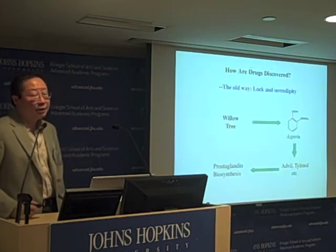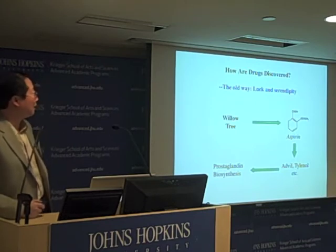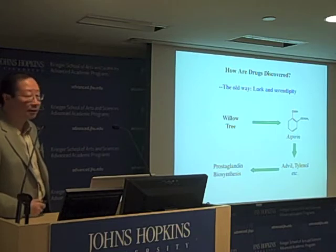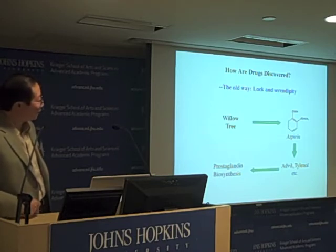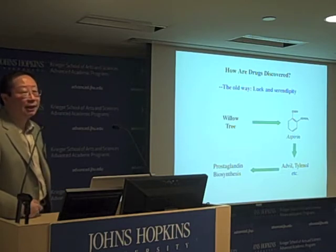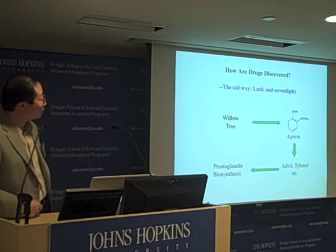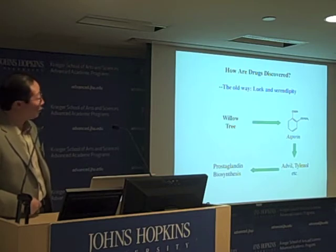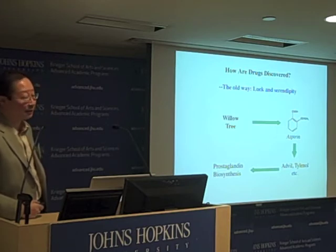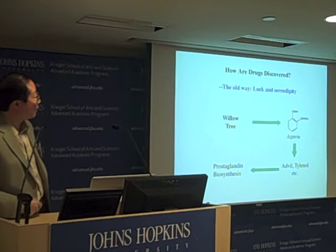The way new drugs are discovered has undergone dramatic changes. Historically, the older way drugs were discovered was simply by sheer luck and serendipity. Here I'm showing you one classic example of drug discovery. In the ancient Greek civilization as well as Chinese civilization, it was recognized that the bark and leaves of the willow tree can alleviate pain and fever. Thanks to the work of chemists and pharmacologists, the active ingredient from the willow tree was discovered and refined into what we now know as aspirin, which is perhaps one of the most consumed medicines today.